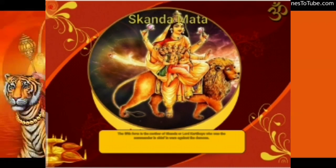The fifth form of Goddess Durga is Skandamata. She is seated on a lotus and her favourite fruit is banana.